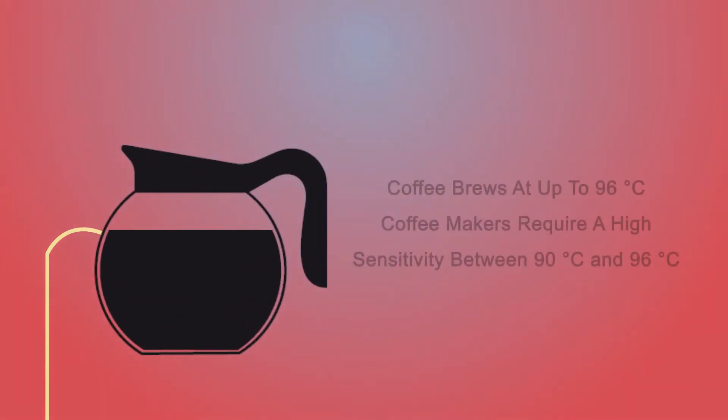On the other hand, coffee brews at temperatures up to 96 degrees Celsius. Therefore, a coffee pot would require a thermistor with sensitivity in the range of 90 to 96 degrees Celsius.